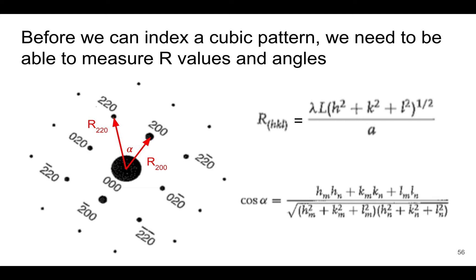Before we can index a cubic pattern, we need to be able to measure a couple of things. In the previous lecture we talked about these R values, which are the distances from the central spot to the diffraction spot, amplified or magnified with the camera length. We can measure those lengths directly from the diffraction pattern and then, using information about the camera length, obtain the interplanar spacing for the hkl set of planes corresponding to that spot.